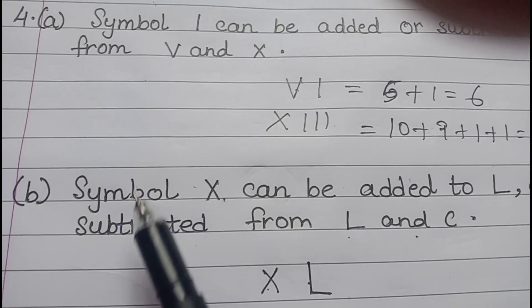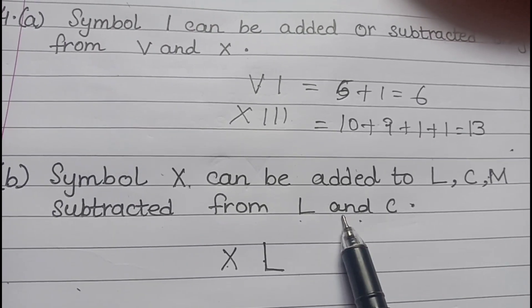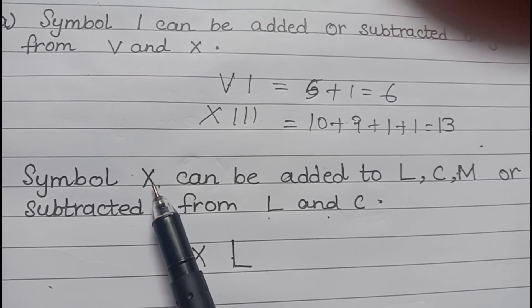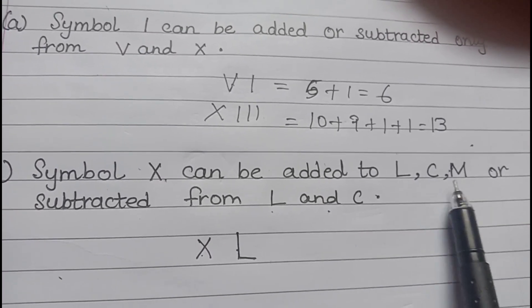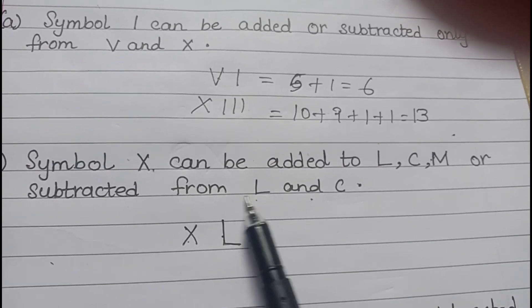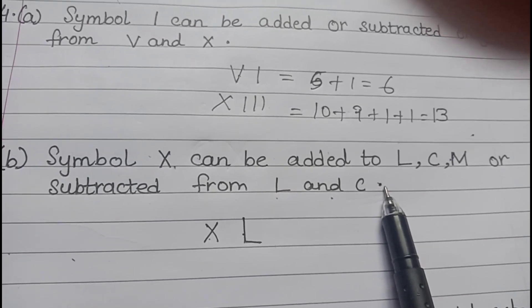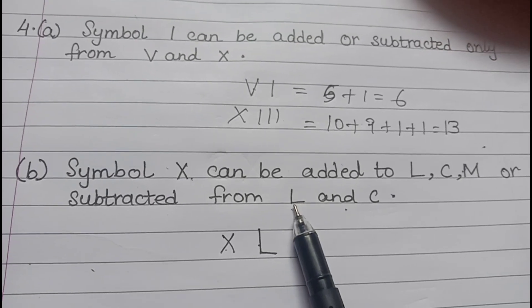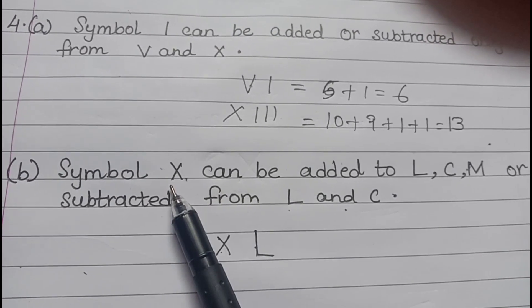Symbol X can be added to L, C, or M, but for subtraction, X can only and only be subtracted from L and C. That means X cannot be subtracted from D or M — only the two numbers closest to it.